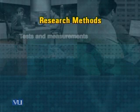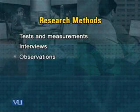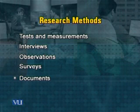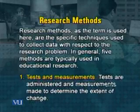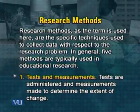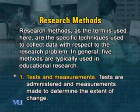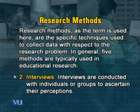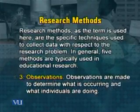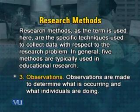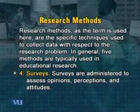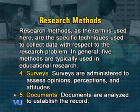We use at least five methods: tests and measurement, interviews, observation, surveys, and documents. These are basically five methods used to collect data for all types of research, qualitative and quantitative. Tests are administered and measurements made to determine the extent of change that will take place. Interviews are conducted with individuals or groups to ascertain their perceptions. Observations are made to determine what is occurring and what individuals are doing. Surveys are administered to assess opinions, perceptions, and attitudes. Documents are analyzed to establish records — sometimes different artifacts are used to analyze and establish records and theories.